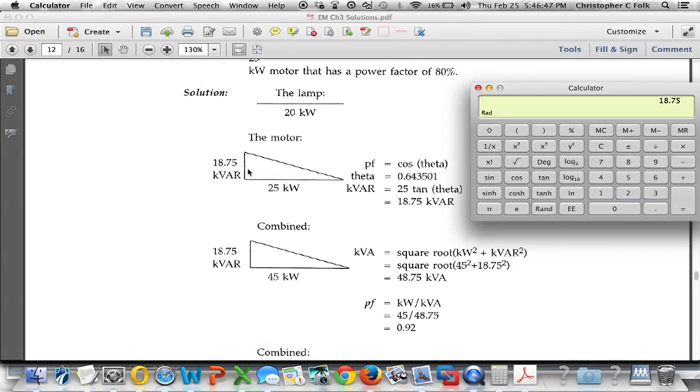One thing I would like to point out here though, and that they don't show in this, is we could then get this length here. This is the hypotenuse. We could determine what that is by getting the square root of the sum of these two values squared. Well, they do that down here in the next problem, but I'm just going to do it for this one here.